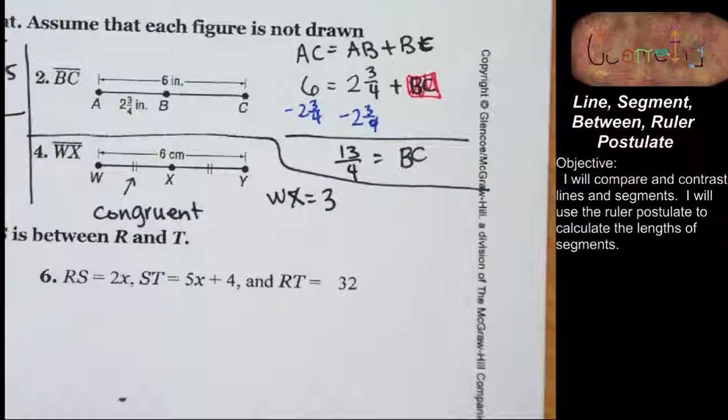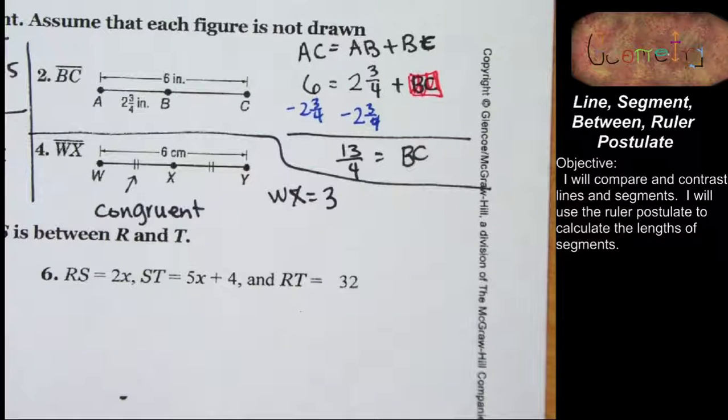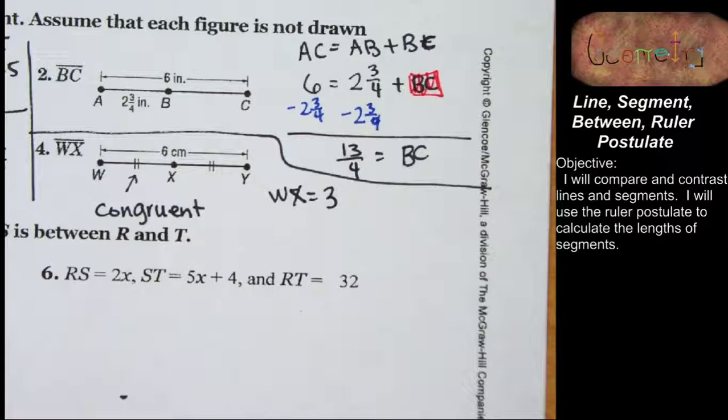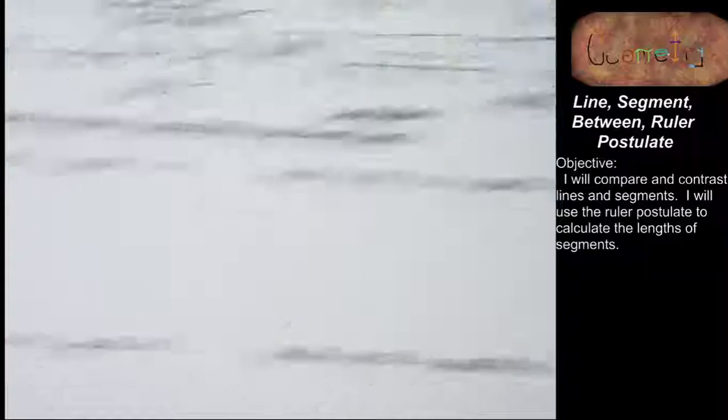Because they're congruent, there's two segments of the same length and they add together to give you six. That is a very elegant answer. Thank you. We're going to do number five and then be done.